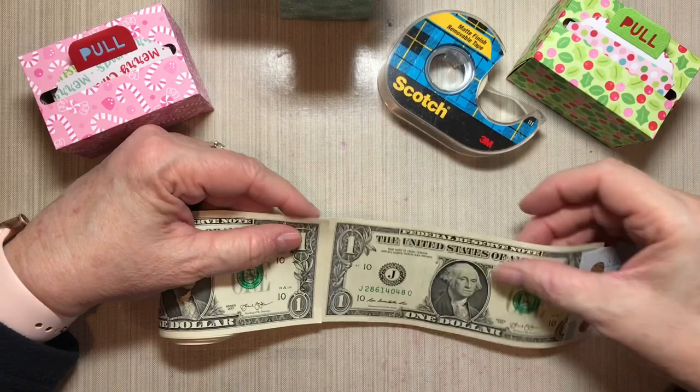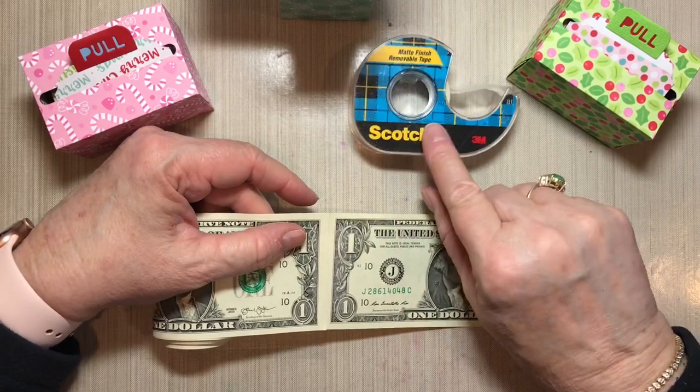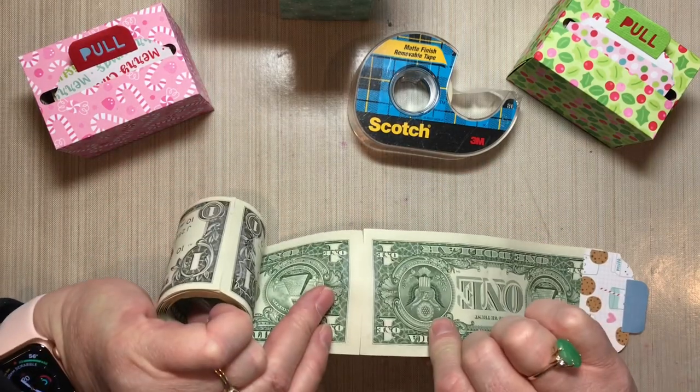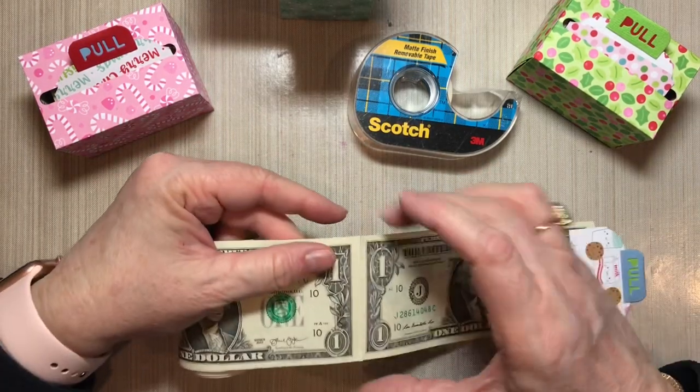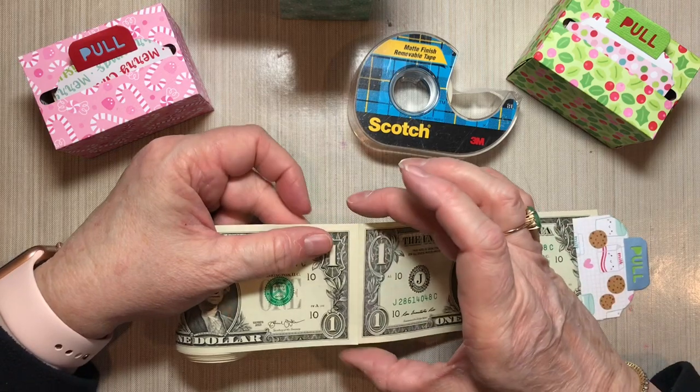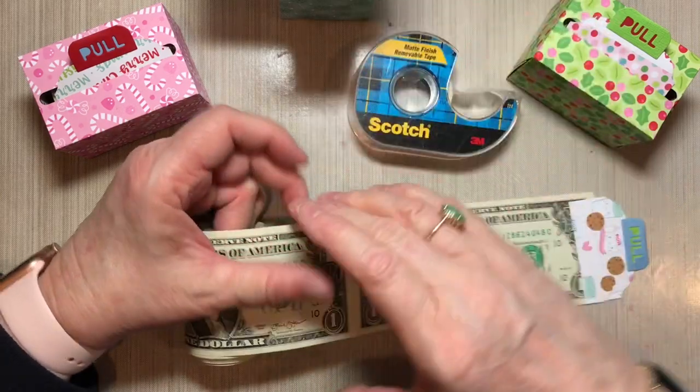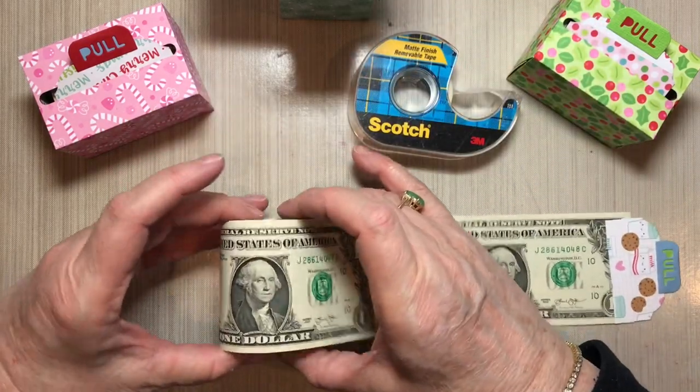I have joined the bills together with the scotch removable tape, putting a strip of tape on the front side of the bill and the back side of it. Also, I discovered that if you do run the tape totally from edge to edge, you have less catching as it comes through the slot.